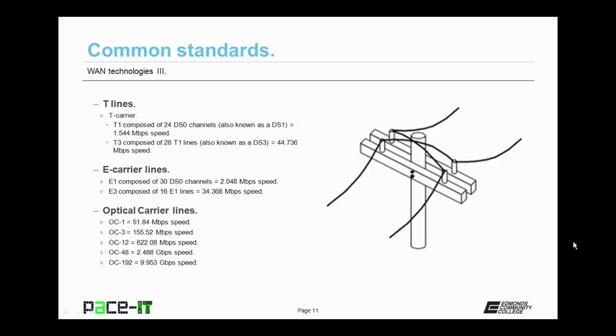If you're in Europe, you might lease an E1 line. An E1 line, which is composed of 30 DS0 channels, can achieve speeds of up to 2.048 megabits per second. Just as with the United States, if that's not fast enough for you, you can lease an E3 line, which is composed of 16 E1 lines, which gives you up to 34.368 megabits per second speed. While a T1 is slower than an E1, a T3 is faster than an E3.